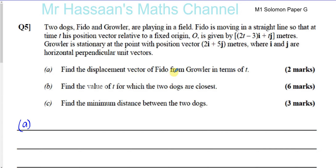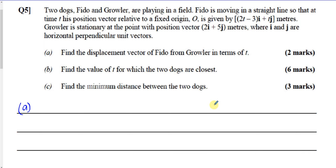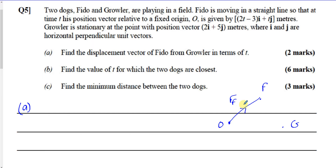Find the displacement vector of Fido from Growler in terms of t. So basically you have to find the vector of how to get to Fido from Growler. So if this is your origin, this is Fido and this is Growler. We know the vector from the origin to Fido — I'll call that RF — and we know the vector from the origin to Growler, which is 2i plus 5j.